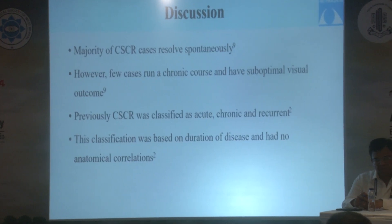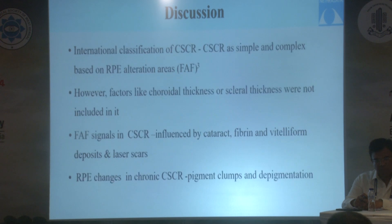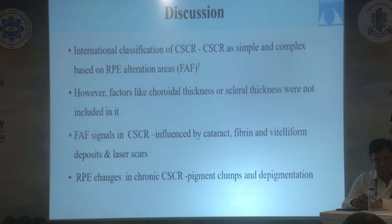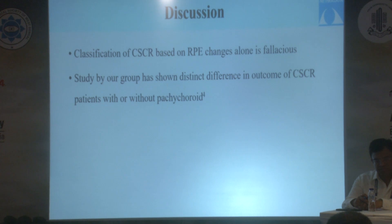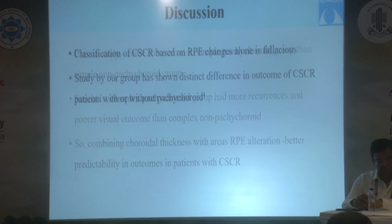Classification based on duration of disease in CSCR had no anatomical correlations. The international classification, which classified on the basis of RPE changes on FAF, did not include factors like choroidal thickness, and FAF signals in CSCR may be influenced by cataract and vitreoretinal lesions. RPE changes in CSCR may also be seen due to pigment clumps and depigmentation, so a classification system based on FAF changes alone is fallacious.